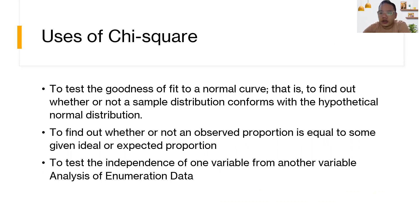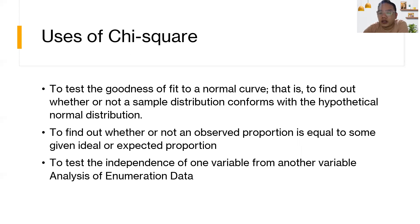Uses of g-square: to test the goodness of fit to a normal curve, that is, to find out whether or not a sample distribution conforms with the hypothetical normal distribution; to find out whether or not an observed proportion is equal to some given ideal or expected proportion; and to test the independence of one variable from another variable in analysis of enumeration data.